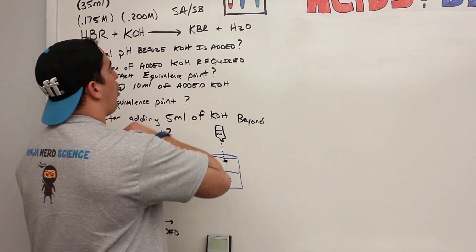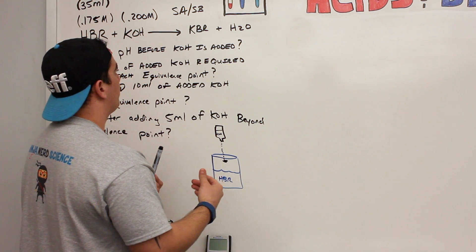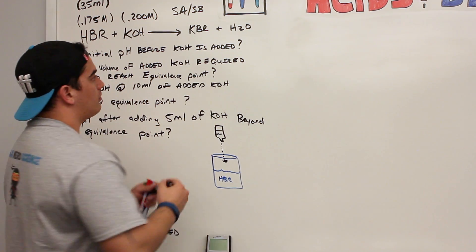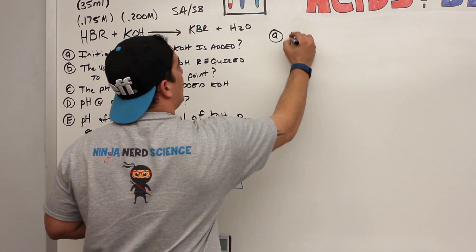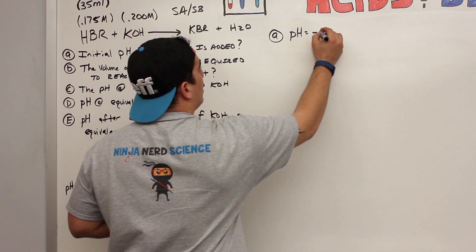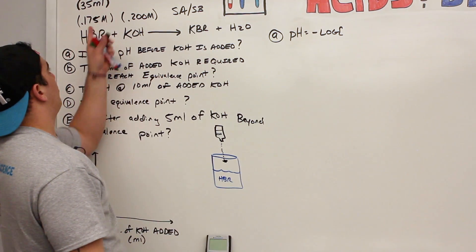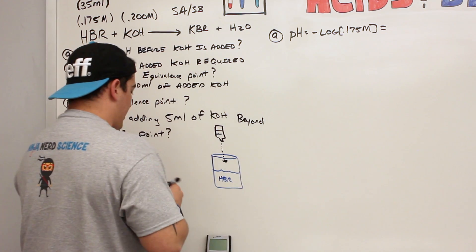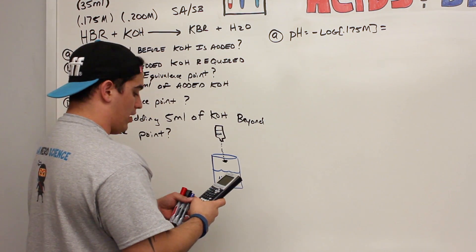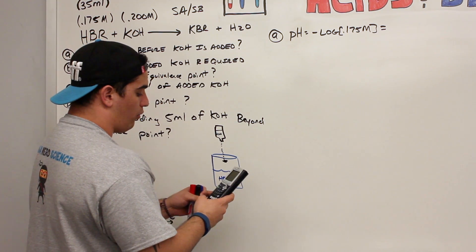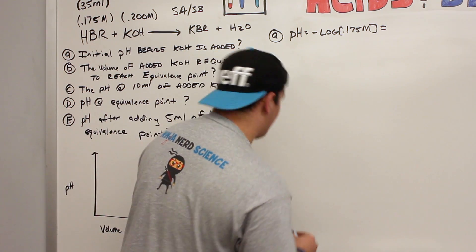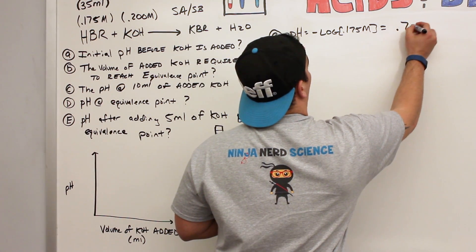HBr is a strong acid, so all of it completely dissociates into H⁺ and bromide ions. All I have to do is take the negative log of its molarity. The molarity is 0.175 M, so pH = −log(0.175) = 0.78. That is our pH before we add in any potassium hydroxide.